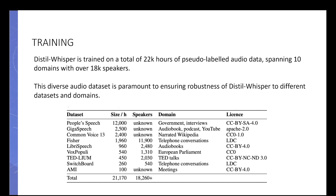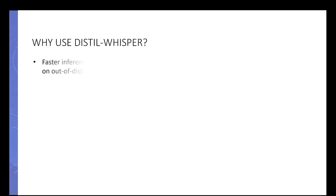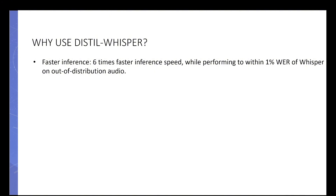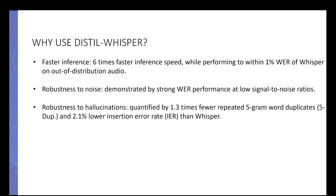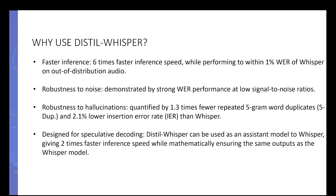If you're still asking why you need Distil-Whisper: it provides six times faster inference than the original Whisper while maintaining the word error rate within one percent of the original. It's robust to noise and hallucinations. It's also designed for speculative decoding, where the distilled model can be used as an assistant to the Whisper model giving two times faster inference speed. Most importantly, it's licensed under the MIT license, meaning you can use it for commercial purposes.